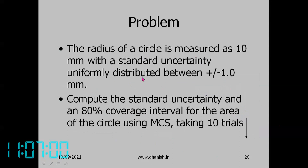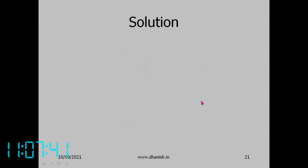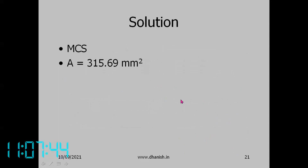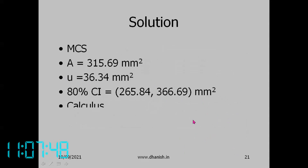Another problem: the radius of a circle is measured as 10 mm with standard uncertainty uniformly distributed between plus or minus 1 mm. Compute the standard uncertainty and an 80% coverage interval for the area of the circle using Monte Carlo simulation taking 10 trials. Monte Carlo simulation gives a standard uncertainty of 36.34, which matches closely with the calculus result.